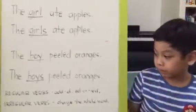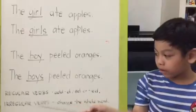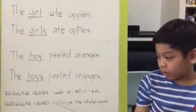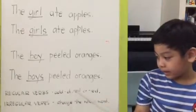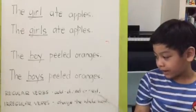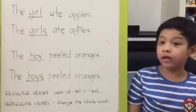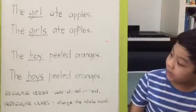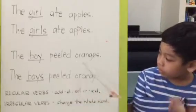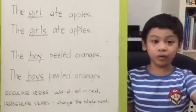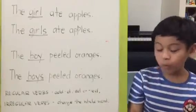First rule: for regular verbs, we add D, ED, or IED to the base form of the verb, just like 'the boy peeled.'